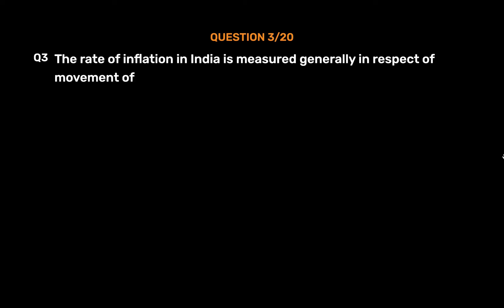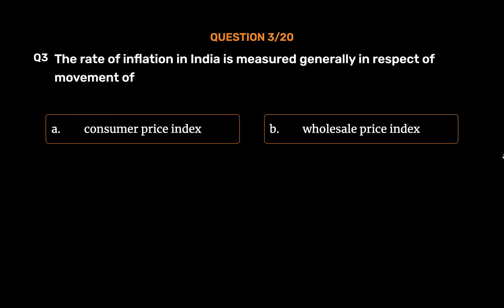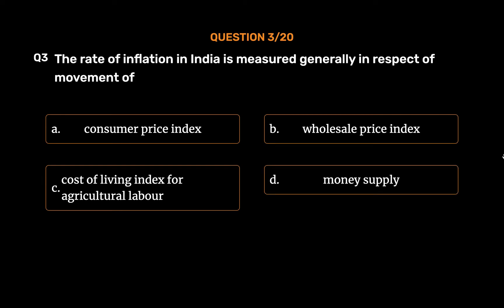Question No. 3: The rate of inflation in India is measured generally in respect of movement of: Option A, Consumer Price Index; Option B, Wholesale Price Index; Option C, Cost of Living Index for Agricultural Labor; Option D, Money Supply. The correct answer is Option B, Wholesale Price Index.